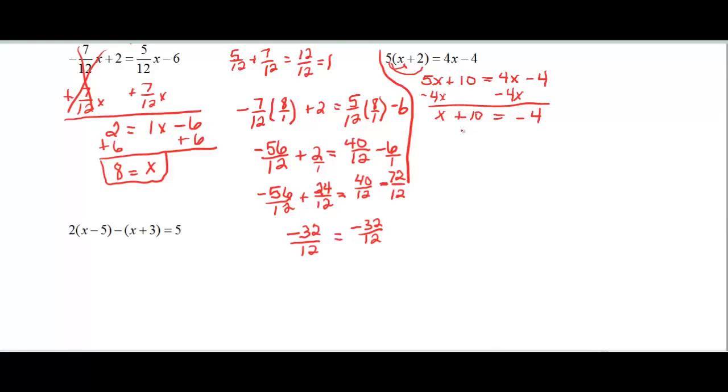And if I want to get the 10 to the other side, I have to do the opposite. It's adding 10, so I have to subtract 10. So those cancel each other out, and I have x equal to negative 14.